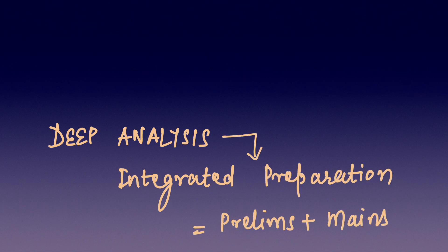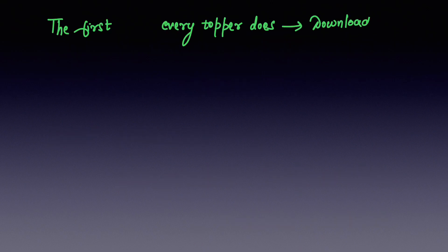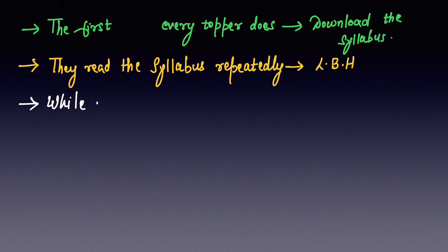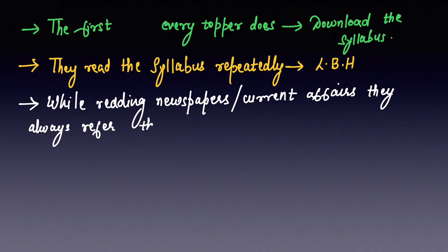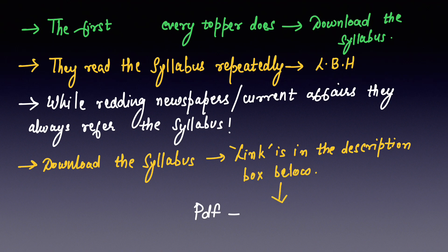The first step is to start with your syllabus — download your syllabus. All the toppers will suggest you to do that because it is a very, very important step in your preparation. They read the syllabus repeatedly, so you have to learn it by heart. While reading newspapers or current affairs, toppers always refer to their syllabus. Most of you must have the question of how to read a newspaper — a video for that is coming soon — but the topics you need to read in your newspaper are all mentioned in your syllabus.